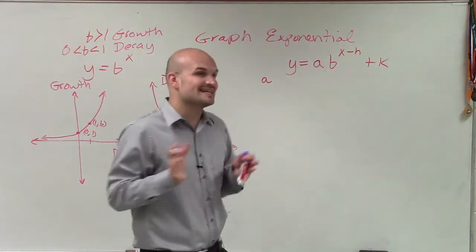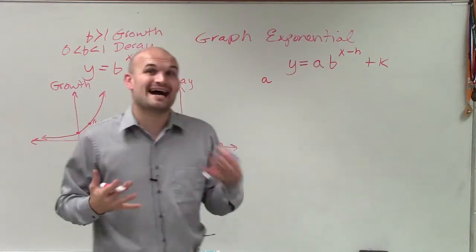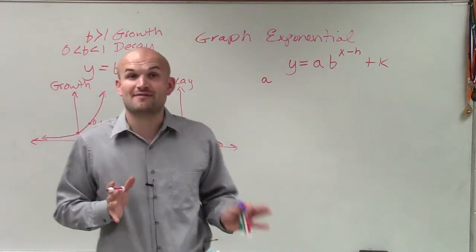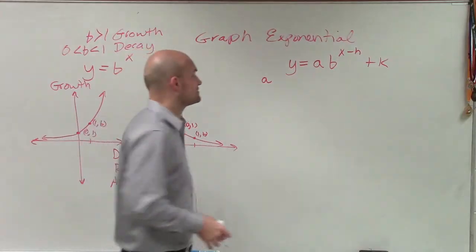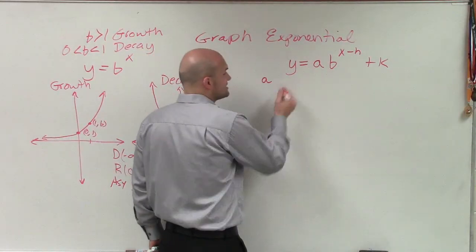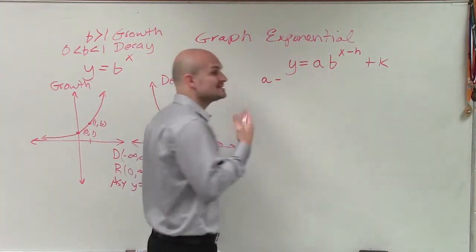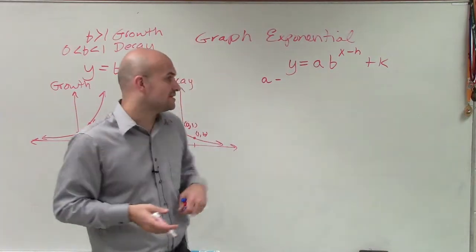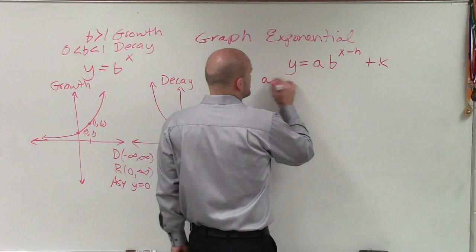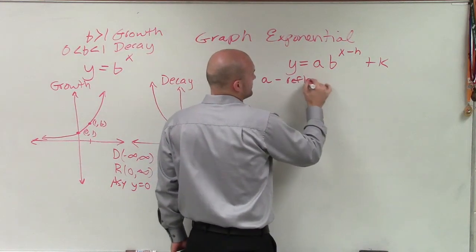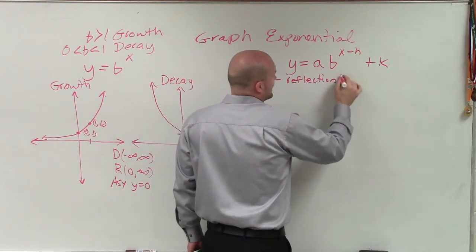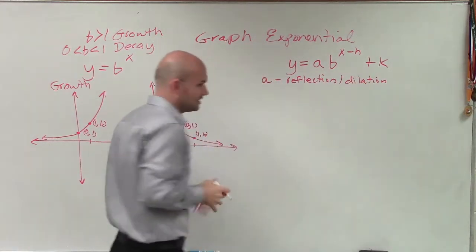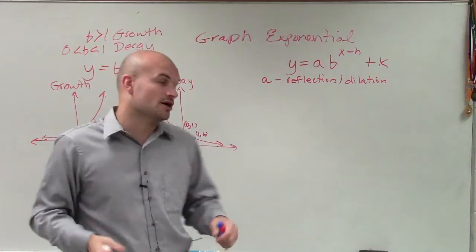The value a represents a dilation within the graph, telling us how much more the graph is going to increase or decrease — a stretching or compressing. Also, if a is negative, then our graph is going to reflect over the x-axis. So a tells us if there's a reflection and a dilation.